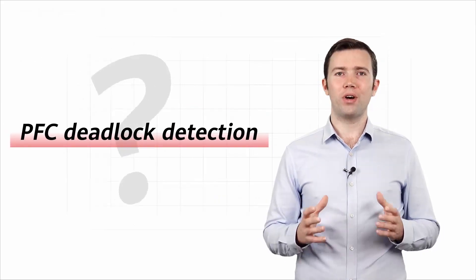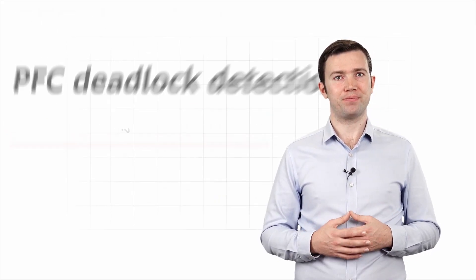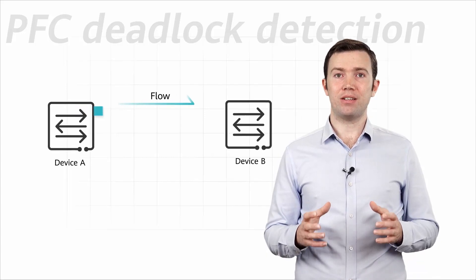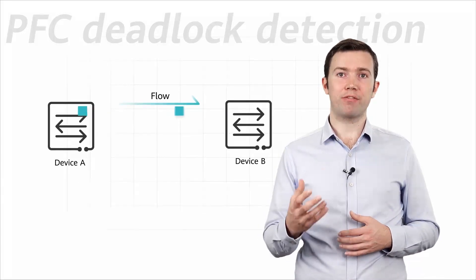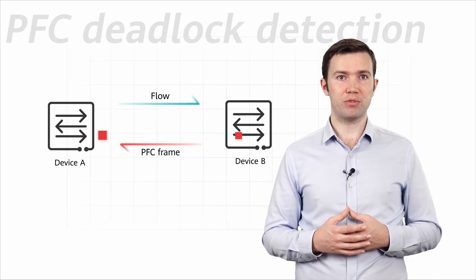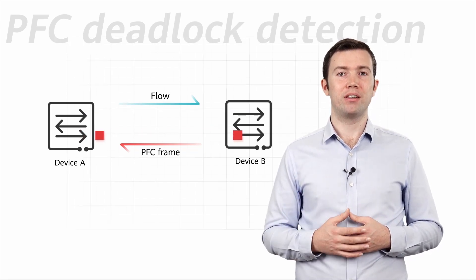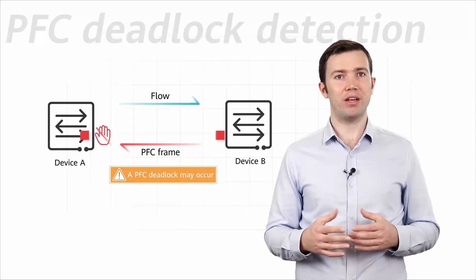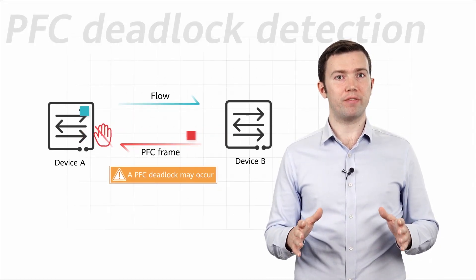So, what is PFC deadlock detection? Well, PFC deadlock detection is used to detect PFC frames on device interfaces. If a device continuously receives PFC frames throughout a certain period, the device considers that a PFC deadlock may occur, and does not respond to the PFC frames for a period of time.